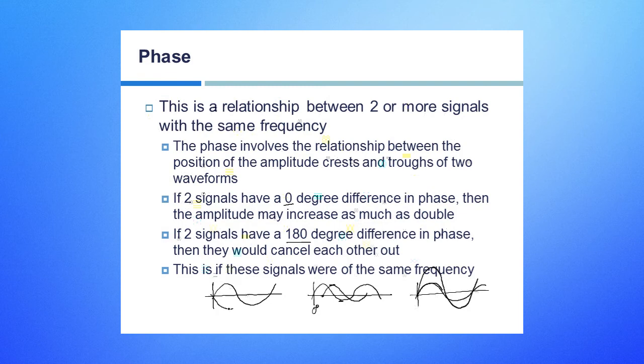would occur, it's negative, at the same time this one's at a positive crest, and so both of those would basically cancel each other out, or could cancel each other out. It does also depend on the amplitude of each of those transmissions.